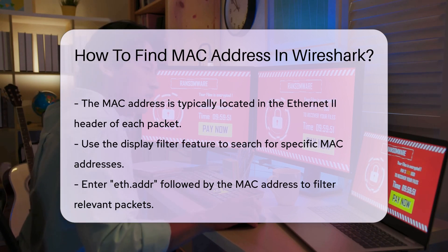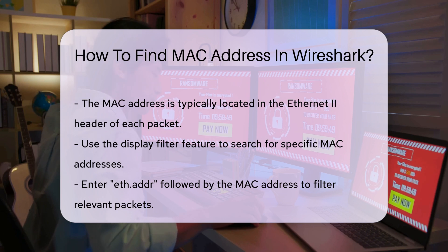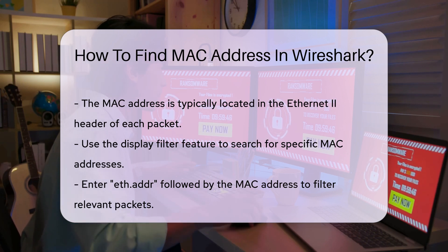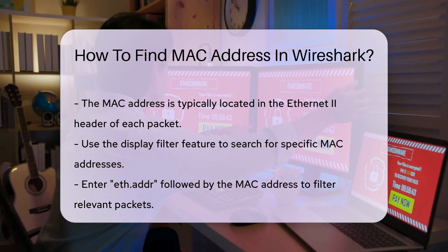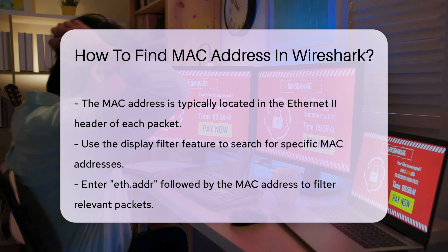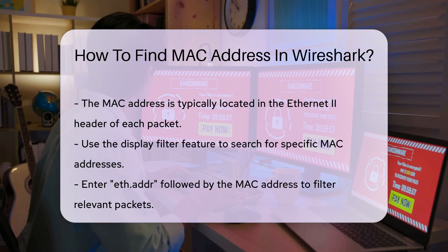Alternatively, you can view the packet details by clicking on a specific packet. This opens a detailed view displaying the Ethernet header. Here, you will find both the source and destination MAC addresses clearly labeled.